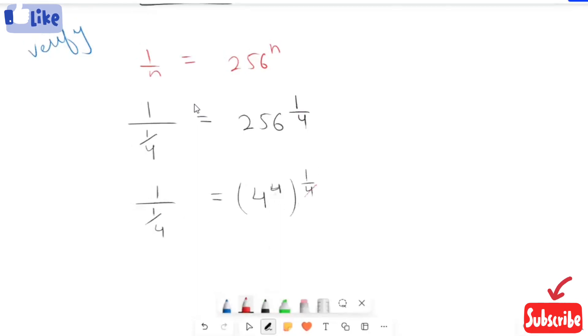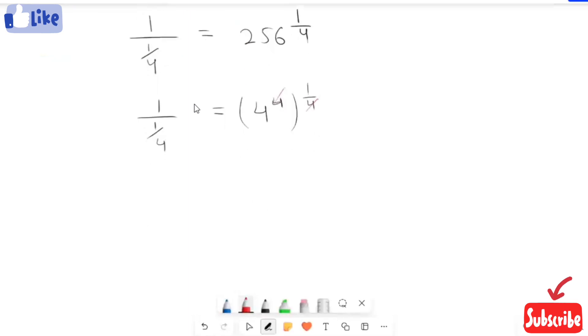So 1 over 1/4 equals 4. When we flip 1 over 1/4, it turns to 4, which equals 4. Our left hand side equals the right hand side.